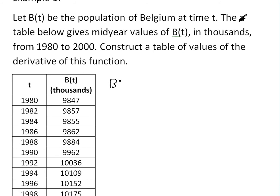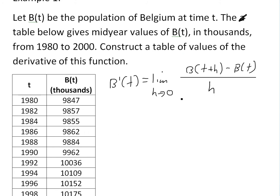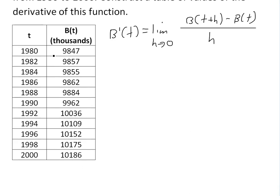If you recall the definition of the derivative, that is B prime of T — the limit as H approaches 0 of B(T+H) minus B(T), divided by H. Since we're only given this table, and every single data point is separated by two years, we can say delta T equals 2.